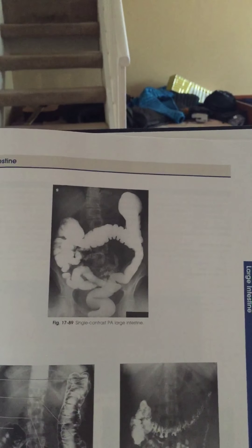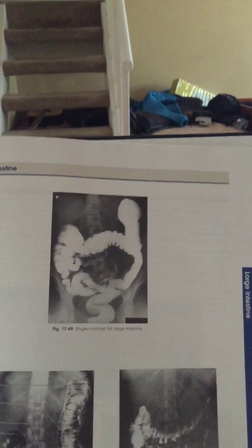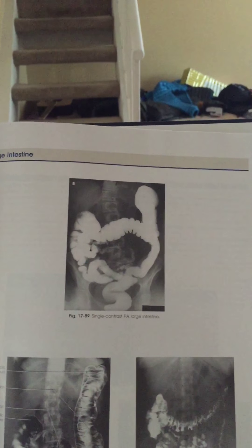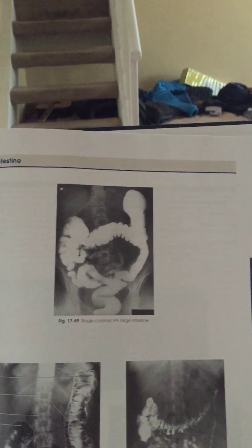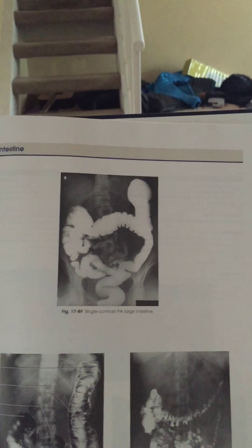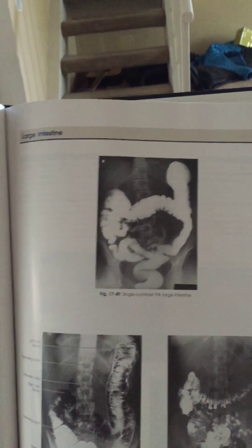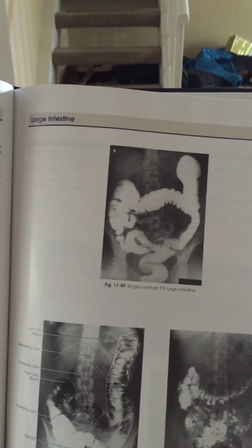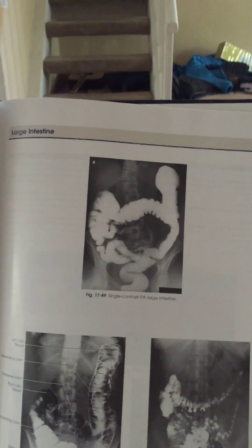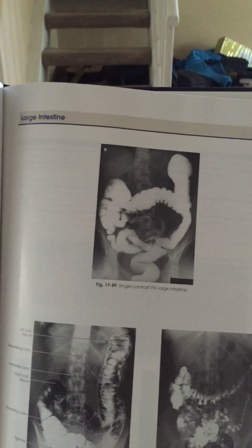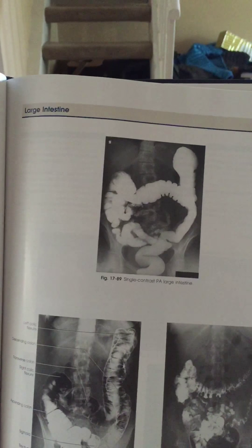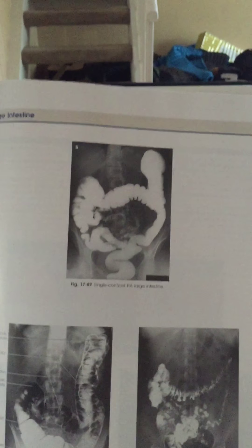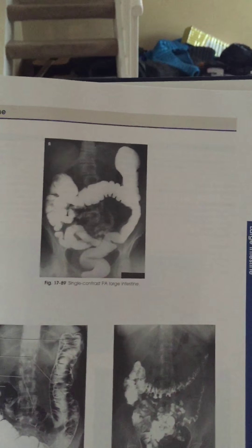In my trigger it was also a PA projection. We're looking for evidence of proper collimation, the entire colon including the flexures and the rectum, and the vertebral column centered so that the ascending and descending portions of the colon are included, plus an exposure technique that shows the anatomy.